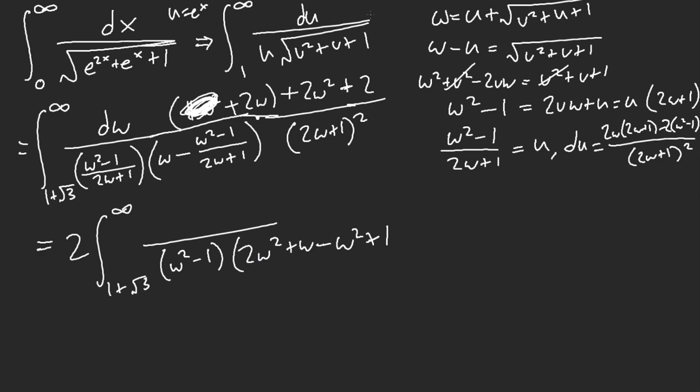Cancelling that out. 2 minus 1 is 1. Oh, we did look at that. This cancels out with this. So, we get dw. So, this is what we have left over.